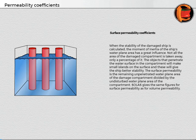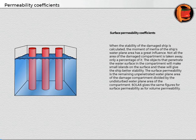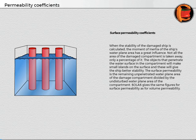The objects that penetrate the water surface in the compartment will make small islands on the surface, and these will give the ship better stability. Surface permeability is the remaining unpenetrated water plane area of the damaged compartment divided by the undisturbed water plane area of the compartment. SOLAS gives the same figures for surface permeability as for volume permeability.